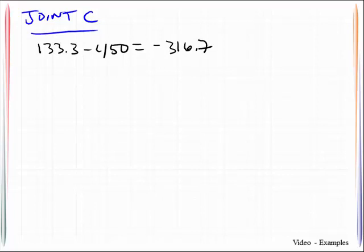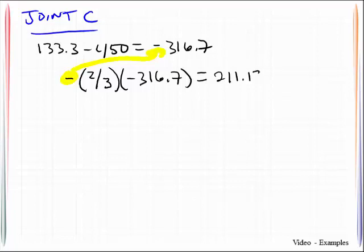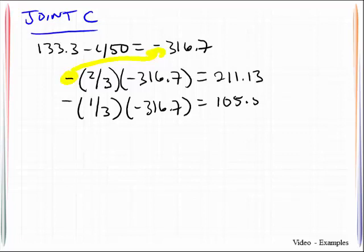That means my joint is that far out of balance. So I need to add that much back in. And the way I will do this is I'll take my distribution factor and multiply it by 316.7. By the way, the negative sign out here is used to counterbalance what is the sign going on here. This works out to be 211.13. And then this is negative 316.7, 105.57.